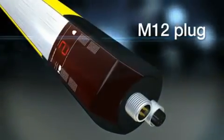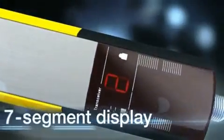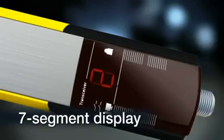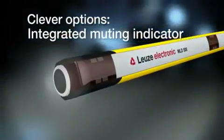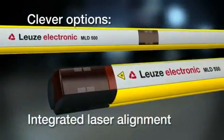In two series, tailored exactly to the user's requirements. Take the seven-segment display for example, making commissioning easy. Add clever features such as integrated muting or the integrated laser alignment aid.